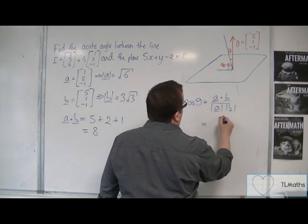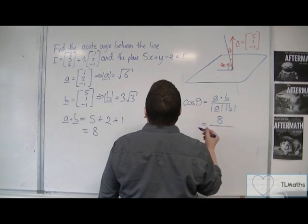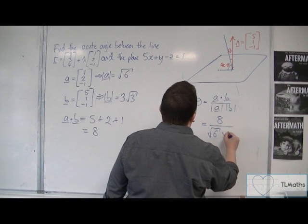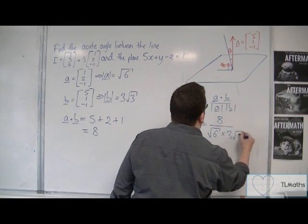So cos theta is 8 over mod a, so root 6, times by 3 root 3.